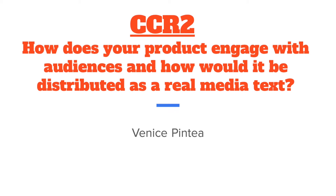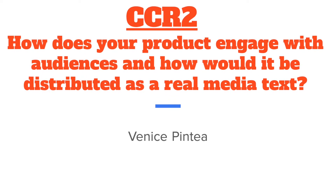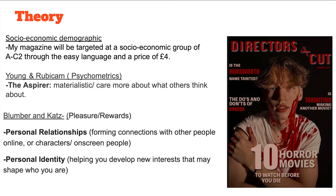CCR2: How does your product engage with audiences and how would it be distributed as a real media text? My magazine will be targeted at a socio-economic group of A to C2 through easy language and a price of £4. This may be expensive for the lower part of this demographic, but I believe that people who fall under the Aspirer psychographics will wish to purchase my magazine as they care deeply about status, so this might make them feel higher class.